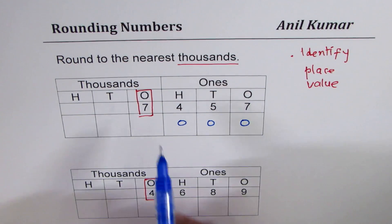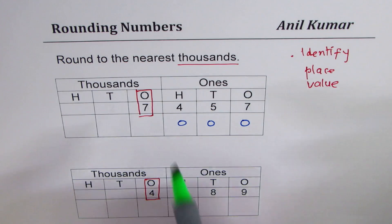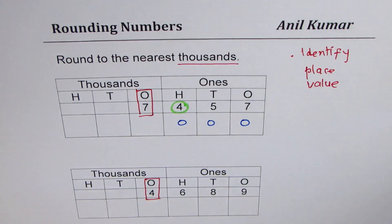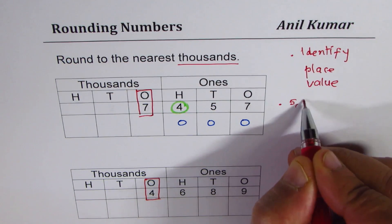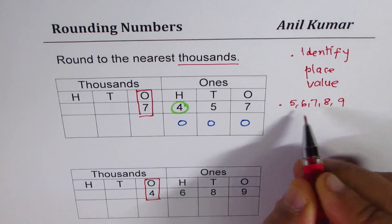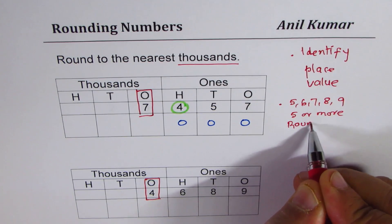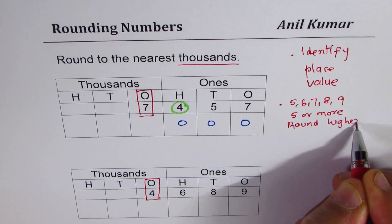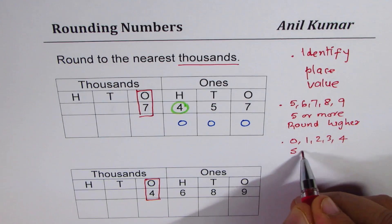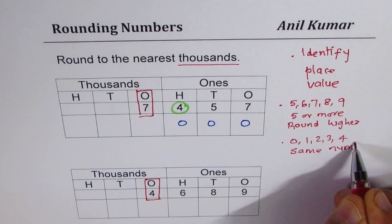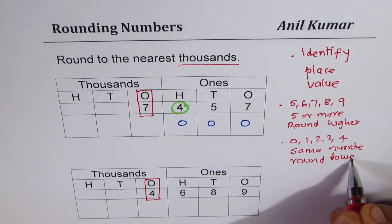Now, the number you identified in the thousands place could remain the same or could increase — that depends on the number to its right. If the number to the right is five, six, seven, eight, or nine — five or more — then round higher. Else, if it is zero, one, two, three, or four, keep the same number — round lower.